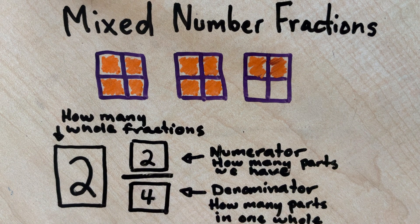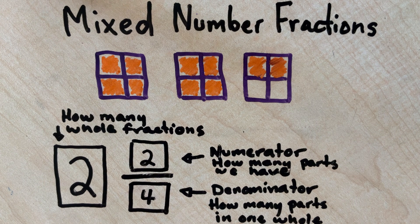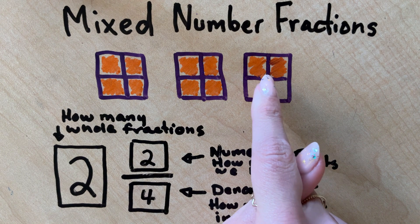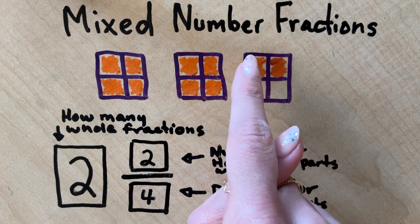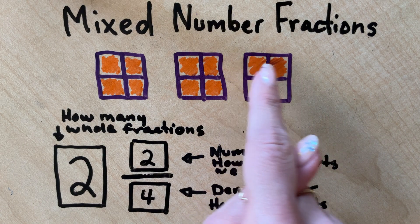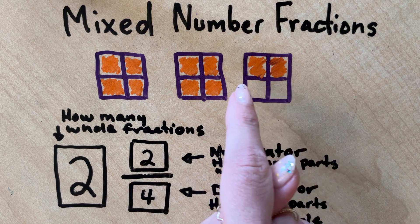This two fourths could be further simplified into one half. Since when we look here, if we were to erase this purple line going vertically, we'd be able to see that half of the box is orange and is colored in, and half of the box would be empty.